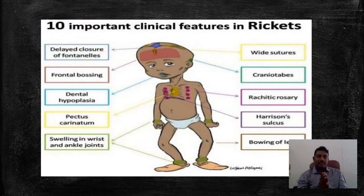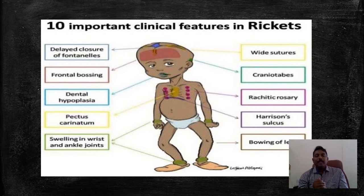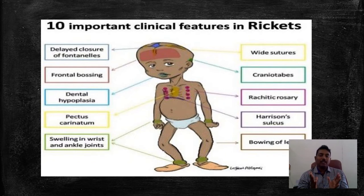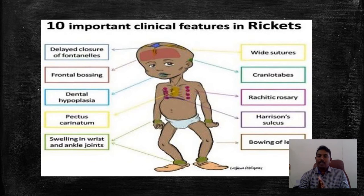Having studied the physiology of vitamin D3 production, let us move on to the clinical features of rickets as shown in the picture. We can broadly classify these as features in the skull, long bones, and chest. In the skull, craniotabes is a softening of the skull bones and is the earliest marker of vitamin D deficiency. There is also widening of sutures, delayed closure of fontanelle, frontal bossing, and dental hypoplasia in the teeth.